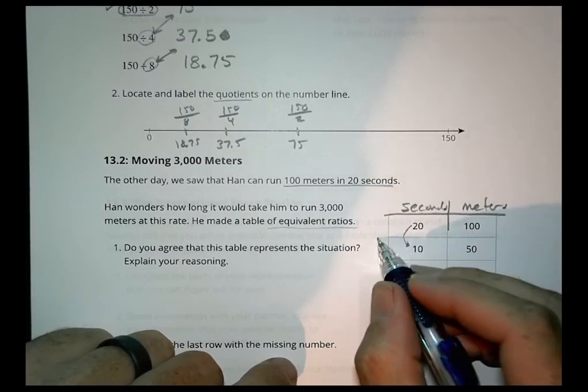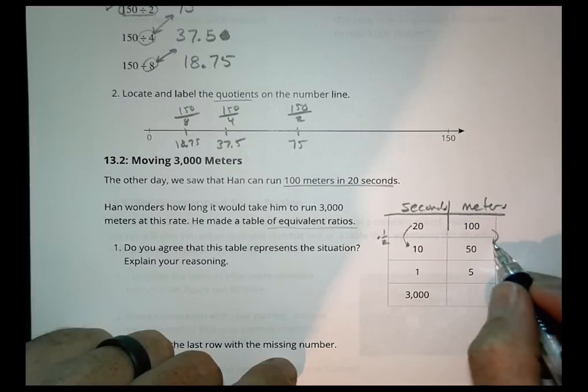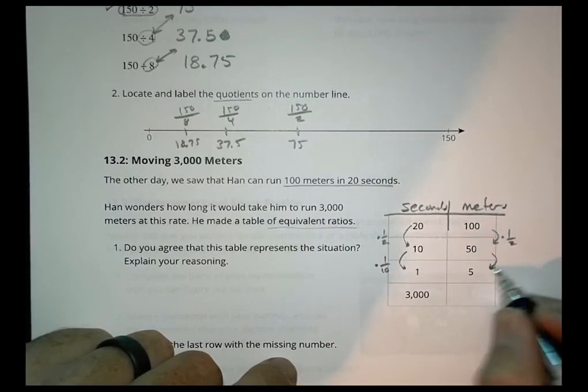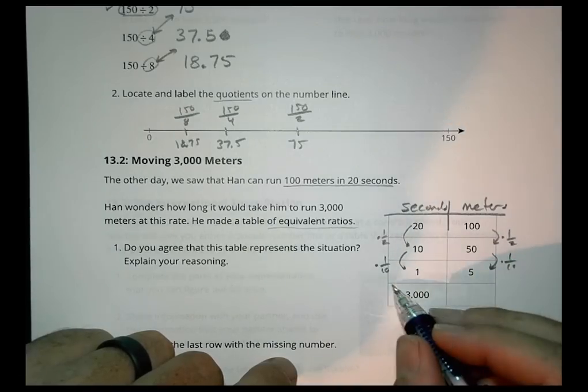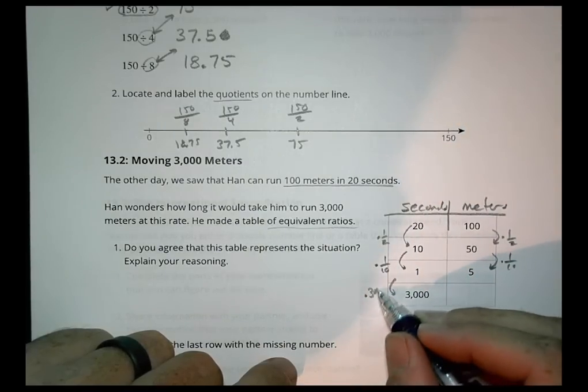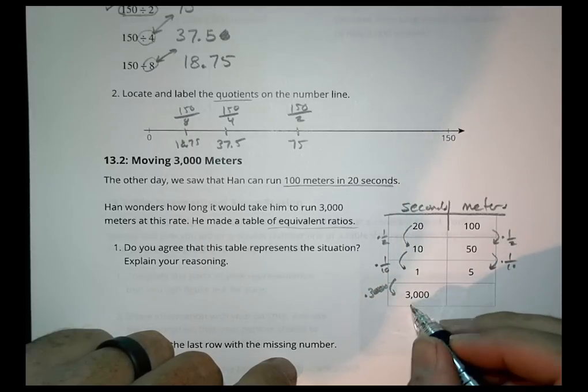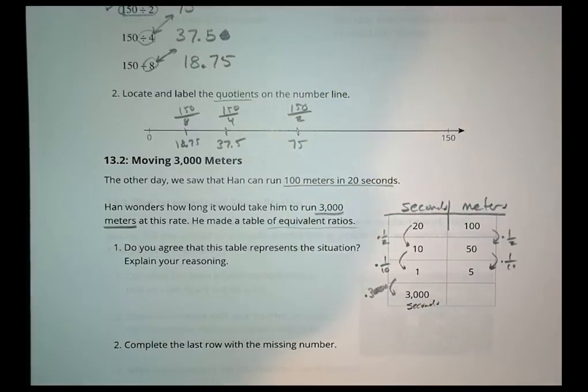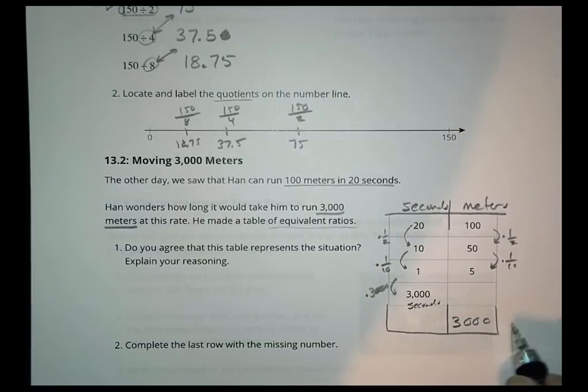We know Han can run 100 meters in 20 seconds. Let's take a look. To go from 20 to 10 is times a half, 100 times a half is 50, that looks okay. To go from 10 to 1 is multiplying by 1 tenth, 50 to 5 is indeed multiplying by 1 tenth. To go from 1 to 3,000 is times 3,000. In terms of the math, that looks okay. But notice, this is 3,000 seconds.